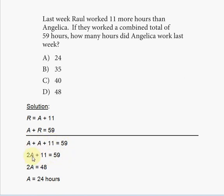Subtract 11 from both sides: 2A equals 59 minus 11, which is 48. Divide both sides by 2 and you have your answer: 24 hours. So choice A is the correct answer for this problem.